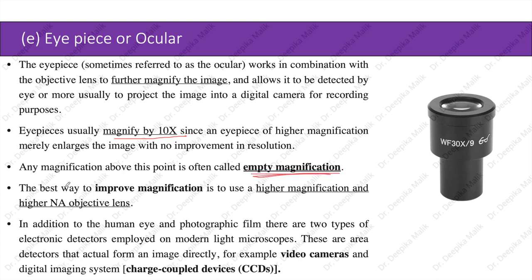The best way to improve magnification is to use a higher magnification and higher numerical aperture objective lens. In addition to the human eye and photographic film, there are two types of electronic detectors used in modern light microscopes: area detectors that form an image directly — for example video cameras — and digital imaging systems using charge-coupled devices (CCDs).